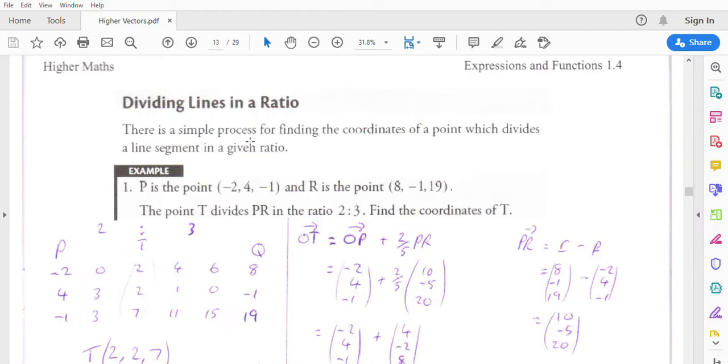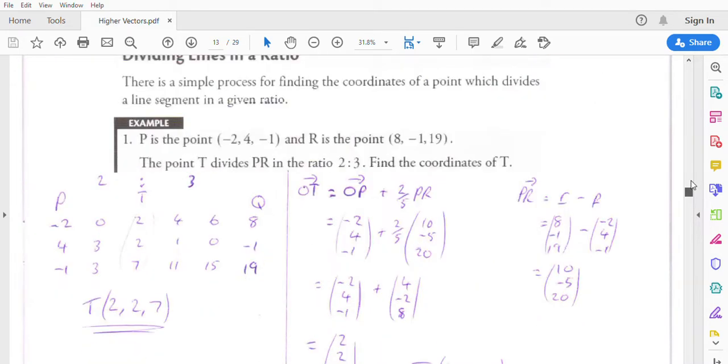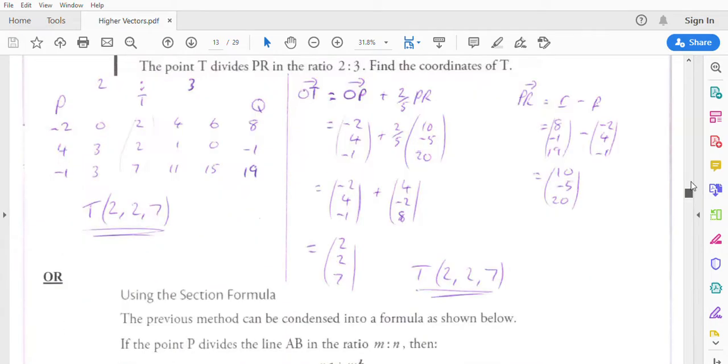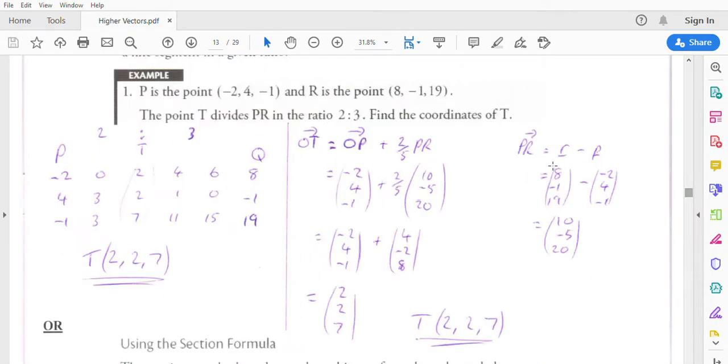There's a simple process for finding the coordinates of a point which divides a line segment in a given ratio. I'll show you a couple of different ways of doing it. So the point T divides PR in the ratio 2 to 3. Find the coordinates of point T. We're going to cut it in the ratio 2 to 3.